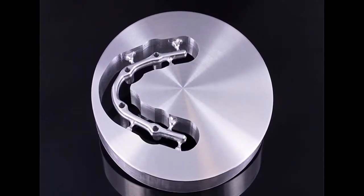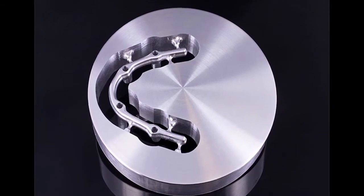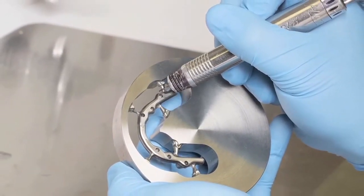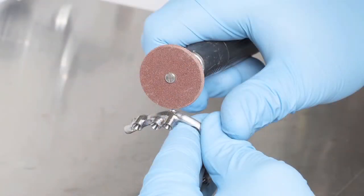When the milling process is complete, the bar undergoes a proprietary treatment process to ensure maximum flexural strength. The sprues that hold the bar within the block are cut and removed, followed by a final hand polish.